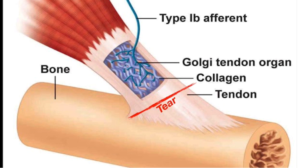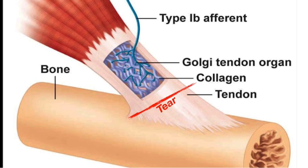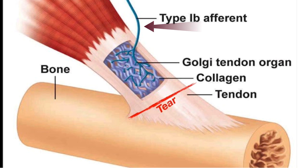Golgi receptors, unlike all the mechanoreceptors we've covered so far which were present in the skin, are present in tendons. They are also known as neurotendinous spindles and are located near the junction of the tendon with the muscle. They sense information regarding muscle tension and send it to the brain. Golgi receptors have a capsule outside with collagen fibers inside, and one or more myelinated sensory nerve fibers pierce the capsule, lose their myelin sheath, branch, and terminate. When the nerve branches get squeezed by moving tendons, they are activated, making them sensitive to muscle tension.